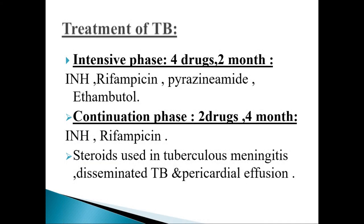Treatment of tuberculosis requires multiple drugs and long-duration treatment. We have two phases of treatment. The first is the intensive phase, in which we use four drugs for two months. These four drugs are INH, rifampicin, pyrazinamide and ethambutol.